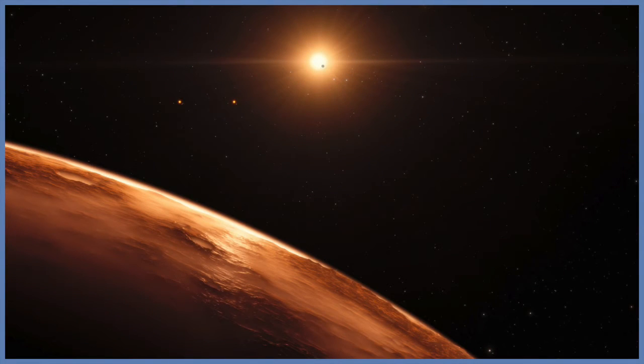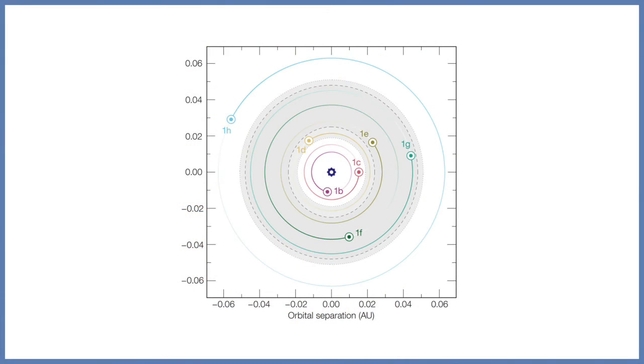Further observations will allow us to determine if these planets are rich in water and also reveal if this water is on the surface. The mass of the seventh and most further out planet has not been estimated. Scientists believe that it's quite icy, but further observations are needed.